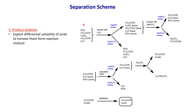Once the reaction is complete, we need to isolate the ester product. The reaction vessel contains ester plus unreacted acetic acid, alcohol, and sulfuric acid — it's still a mixture. We exploit differential solubility of the acid to remove ester from the reaction mixture. In the first extraction, you add water into the reaction vessel, which forms two layers. Excess acetic acid, sulfuric acid, and unreacted alcohol remain in the aqueous layer, while the organic phase contains ester with traces of unreacted materials.